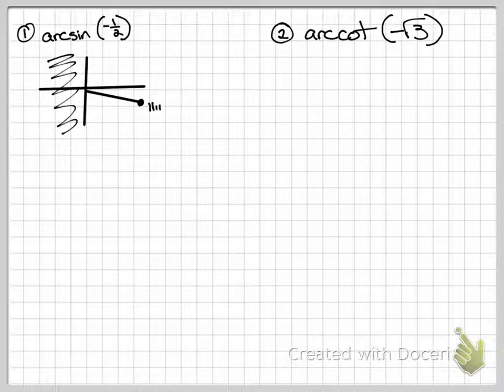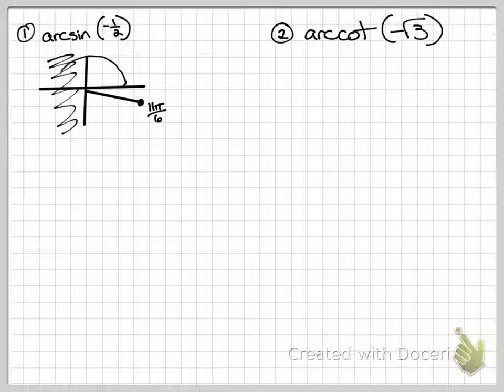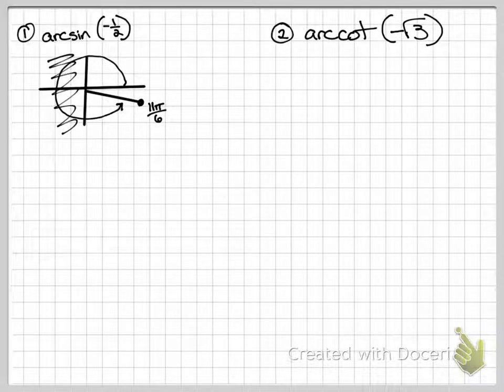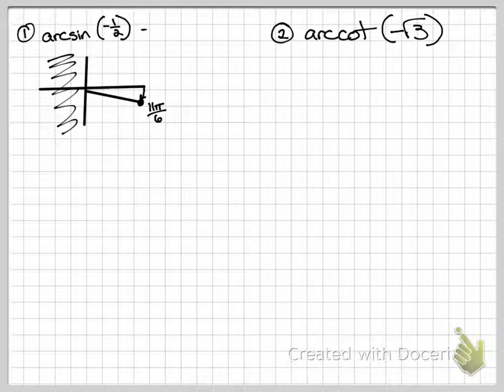which you might call 11 pi over 6, but remember 11 pi over 6 implies that you're going all the way around, and you can't do that, so you need to go the short way, which is negative pi over 6.